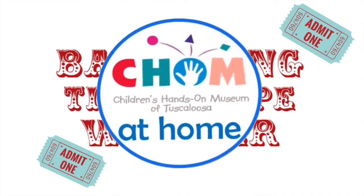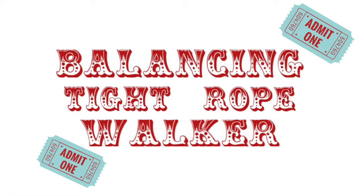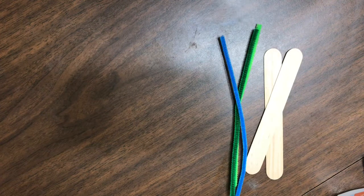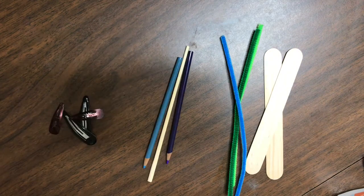Lastly, we're going to make a balancing tightrope walker. You'll need a popsicle stick, a pipe cleaner, some hair barrettes, and a pencil.